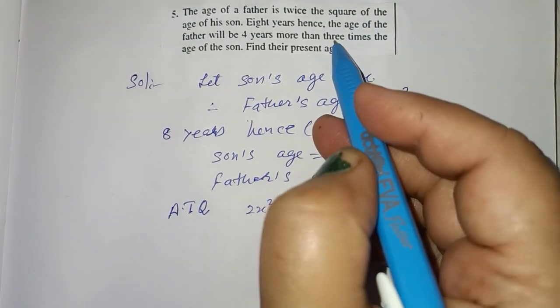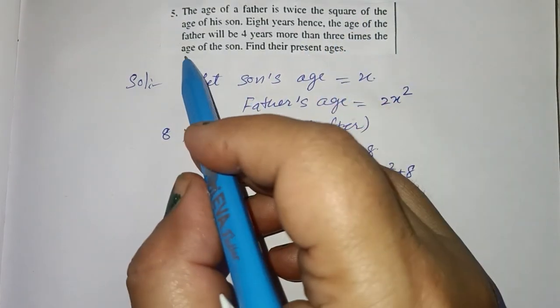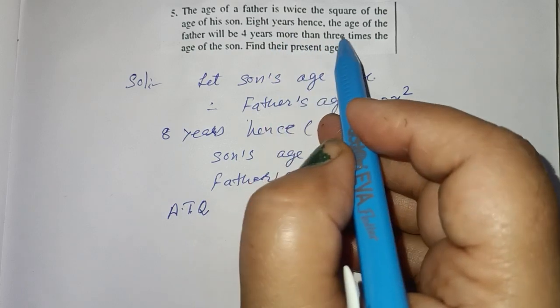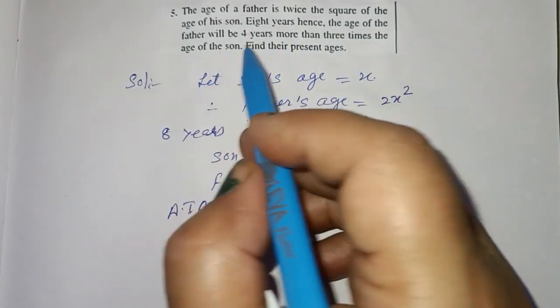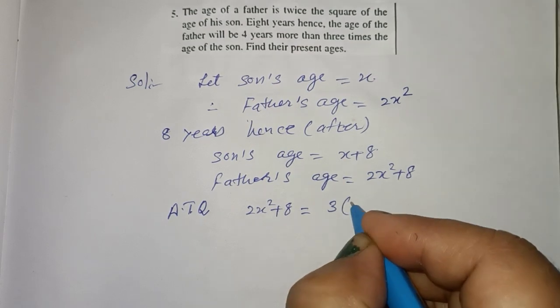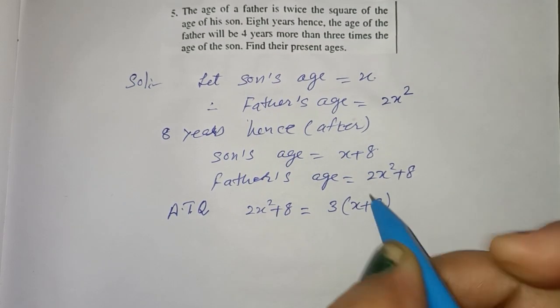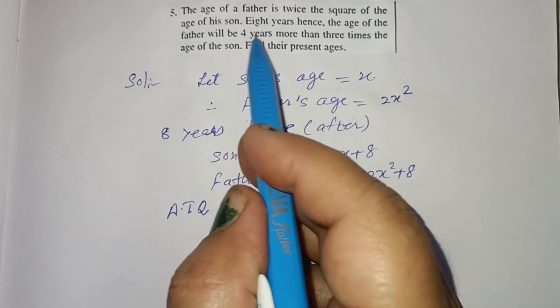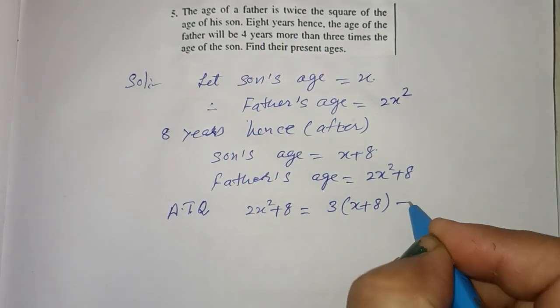Is equal to 3 times the age of the son. Age of the son is x plus 8. 4 years more, plus 4.